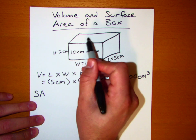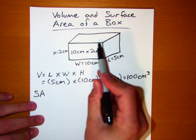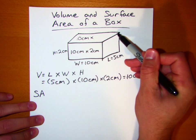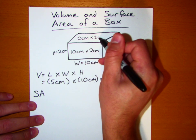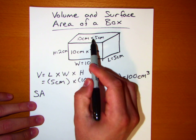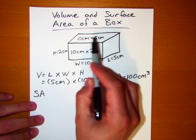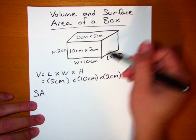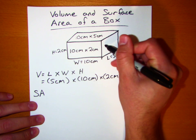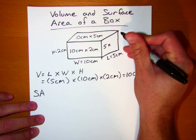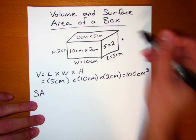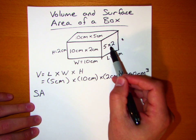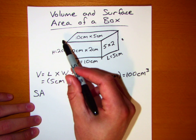Similarly, there's this face on top, and that's got dimensions of 10 centimeters by 5 centimeters — and there's one just like it on the bottom. And then this side face has dimensions of 5 centimeters by 2 centimeters, and there's one just like it on the other side of the box.